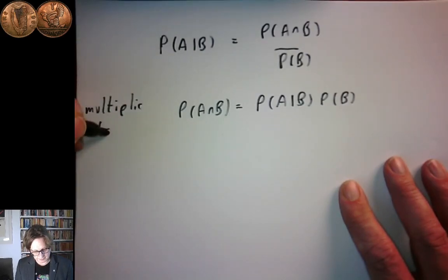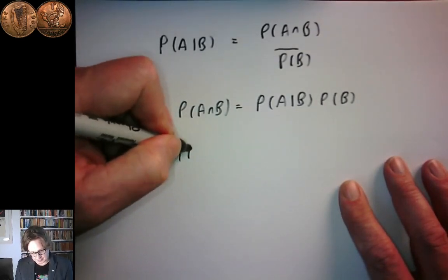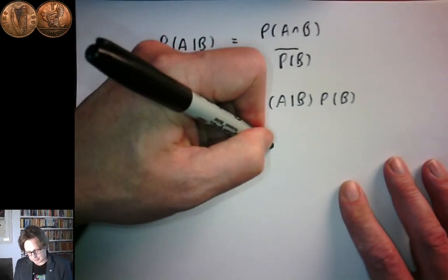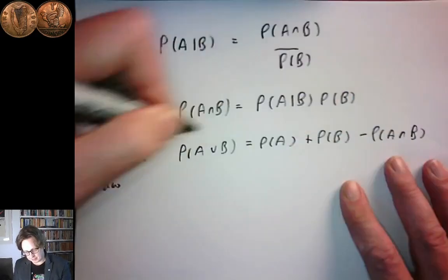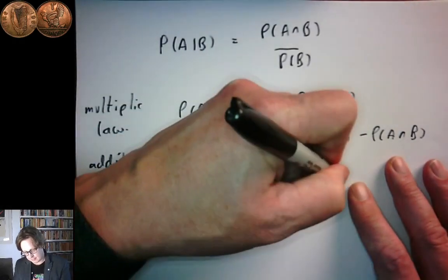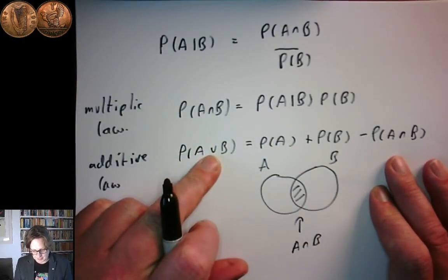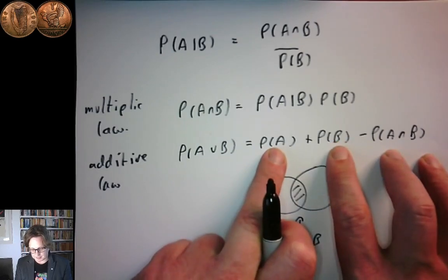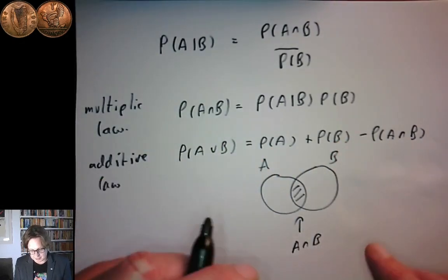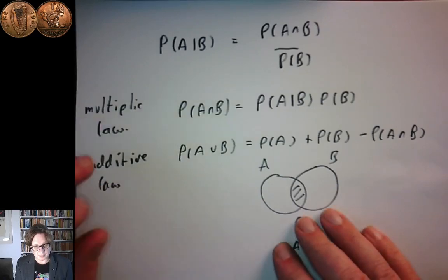Separately, we have a law called the additive law. We're not going to use the additive law today, but it basically says that the probability of A or B is equal to the probability of A plus the probability of B minus the probability of A and B. You can think of probability as a measure of the area of sets — the area of A plus the area of B double counts the intersection, so we need to take that away.